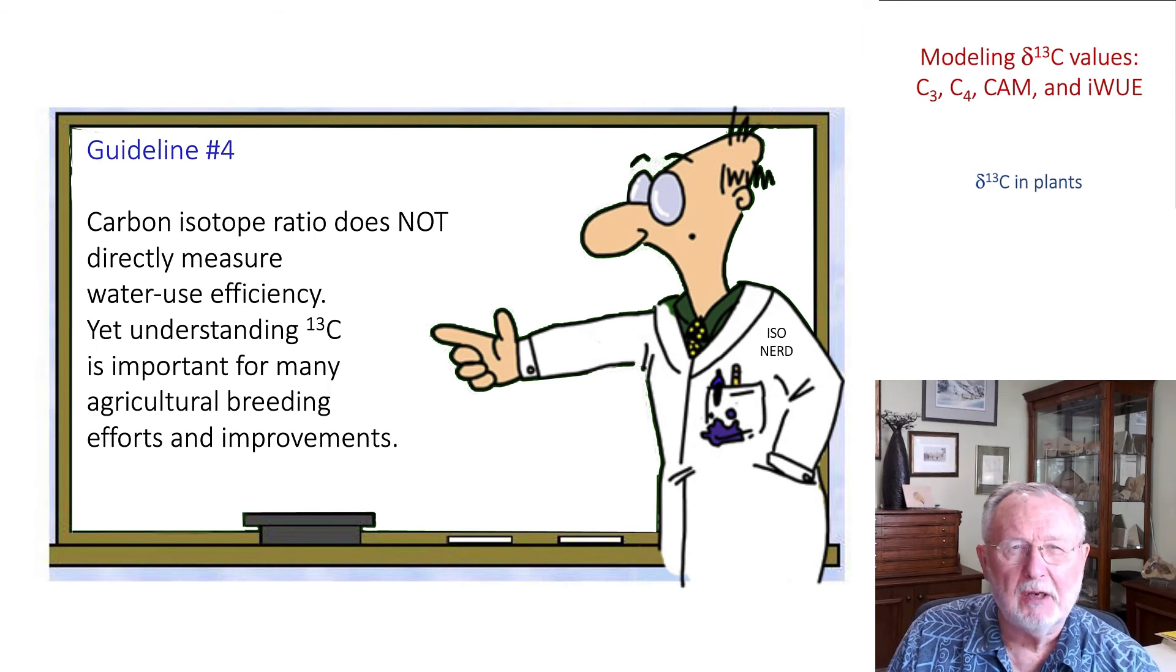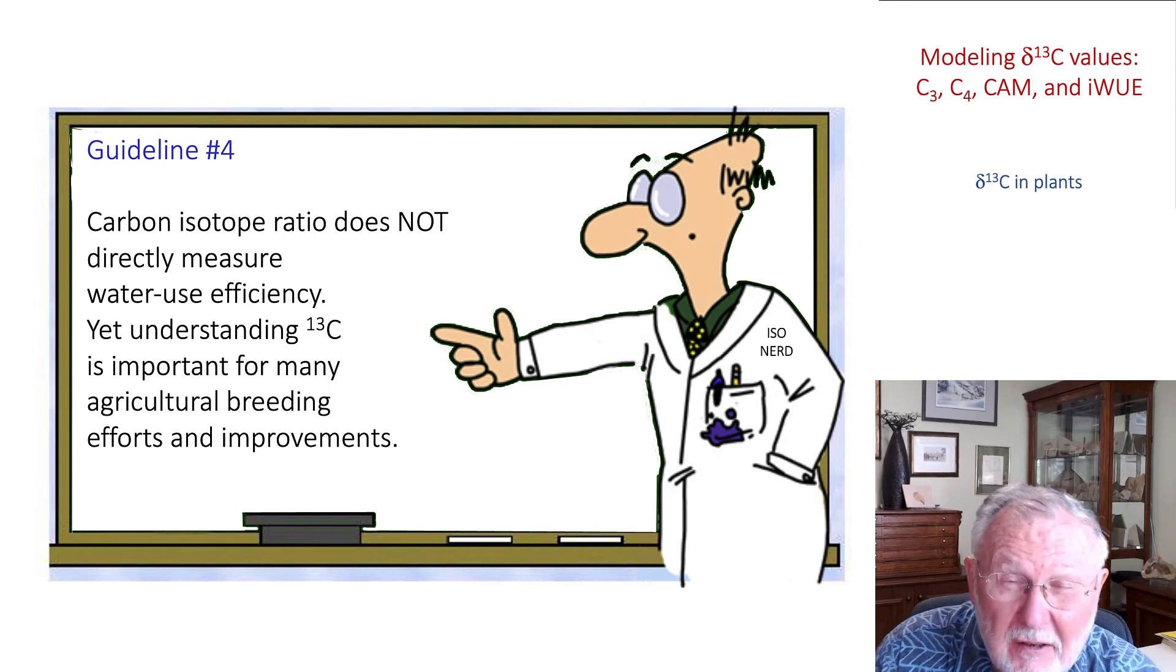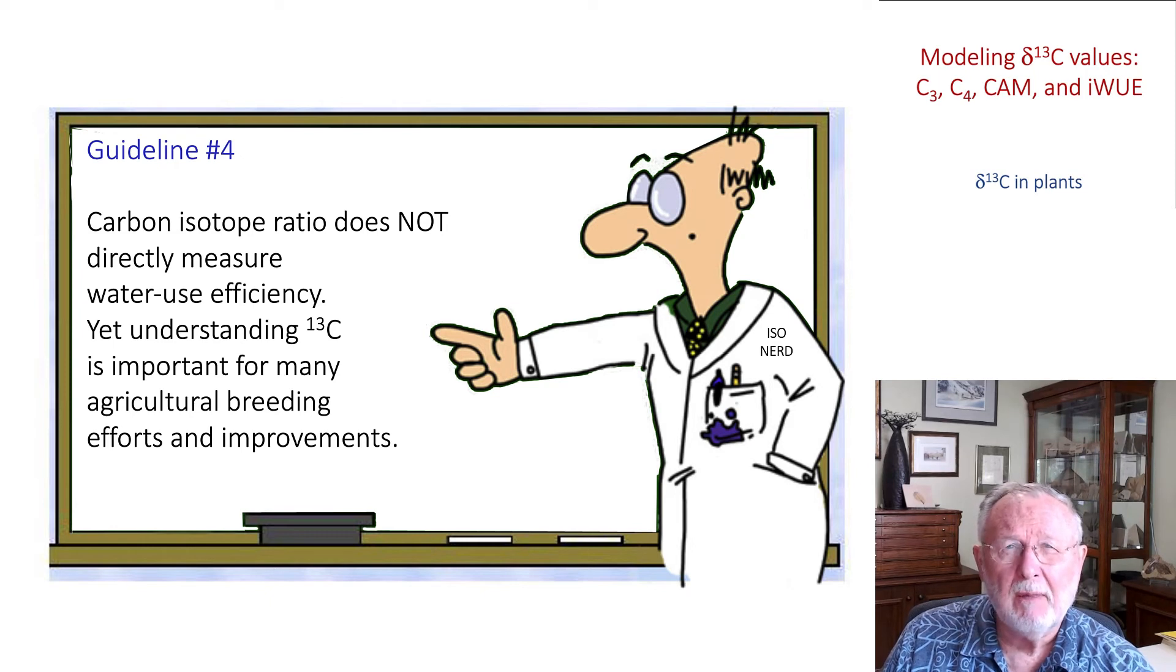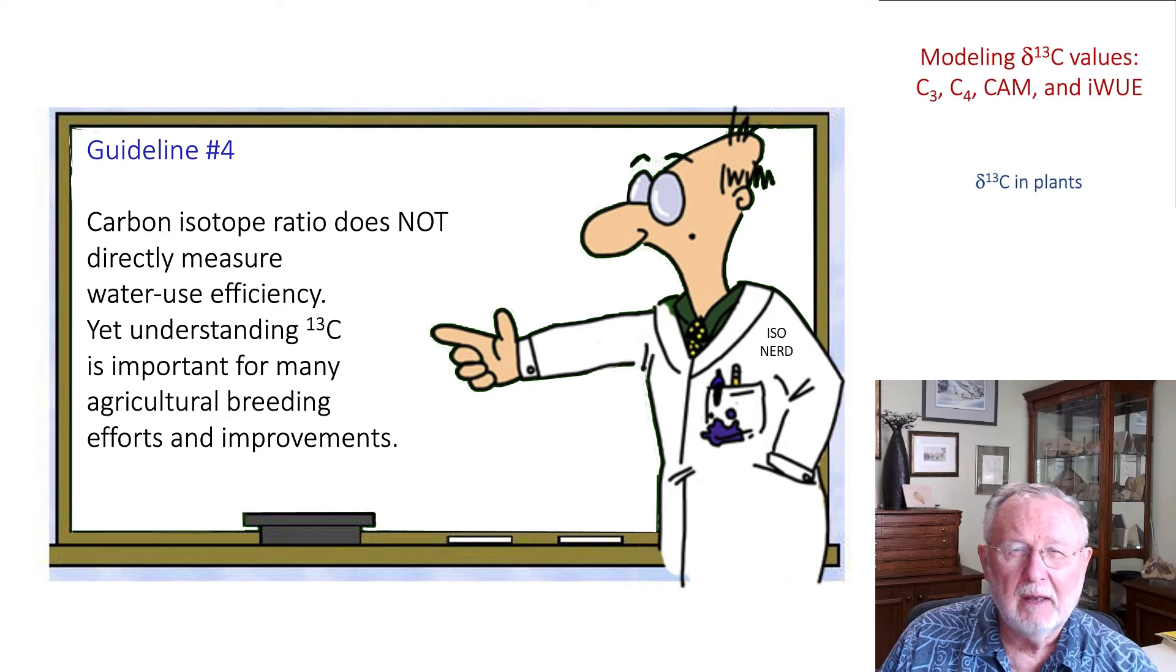Now another term which is commonly used and often misrepresented is the term water use efficiency. This is a term that was first described maybe a century ago, representing the amount of biomass formed relative to the amount of water consumed by a crop. In physiological terms, it became known as the rate of photosynthesis divided by the transpiration rate.